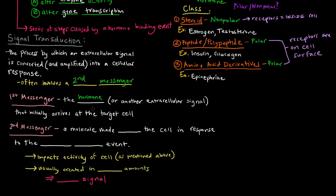In our case, we're talking about hormones being those initial first messengers. Those things initially arrive at the target cell. Those are the first messengers. Now the second messengers—what are those? Those are molecules that are made inside the cell, and they're made in response to the first messenger. A molecule is made inside the cell in response to the hormone binding event, at least in our case.